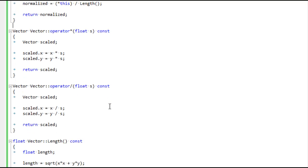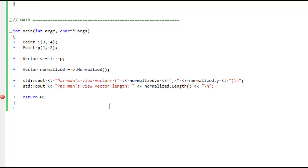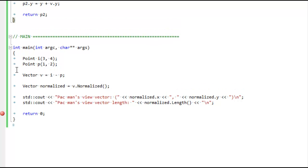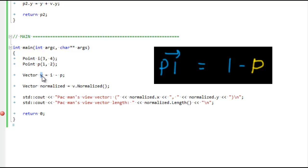So let's go down to our main function. I've created a point where Pac-Man is and a point where Inky is. And I'm going to get a vector from Pac-Man to Inky by taking I minus P. And actually, I think in the video I made this PI, so I'm going to make that PI here too.